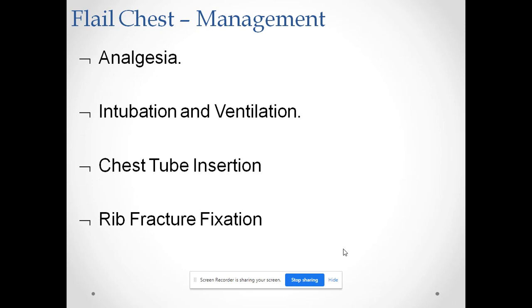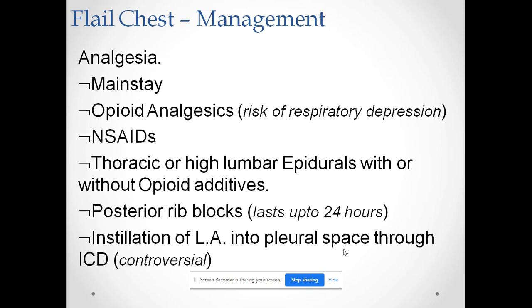Analgesia is the mainstay of treatment in these patients. Other management options include intubation or ventilation, chest tube insertion, and fracture fixation. For analgesia we can use opioid analgesics, systemic thoracic or high lumbar epidural with or without opioid additives, posterior rib blocks, and instillation of local analgesia into the pleural space through an intercostal catheter.